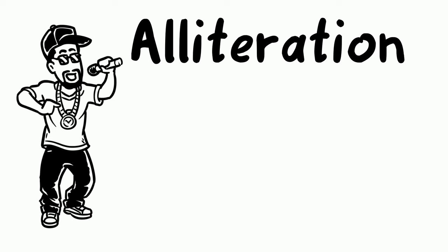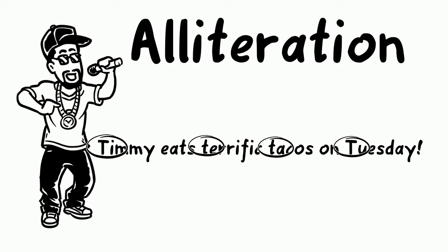Peter Piper picked a patch of pickled peppers. Have you heard this before? This is an example of alliteration. Alliteration is a type of literary device that we often see in poetry. Alliteration means that the beginning consonant sounds and words are the same.